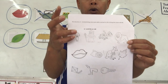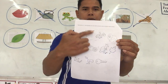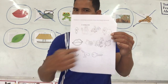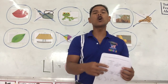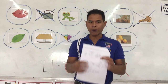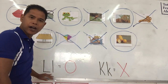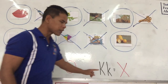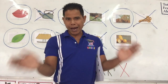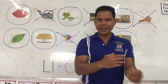So letter L: circle. Letter K: cross it out. That brings us to the end of our lesson on letter L and letter K. I will see you in the next lesson. Bye-bye.